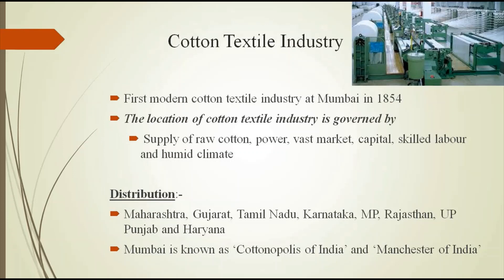To locate the cotton textile industry, some factors are necessary. Especially important is the supply of raw cotton — wherever cotton is grown, it is easy to establish the industry. Power supply and power looms are necessary, along with a vast market. Skilled labor and humid climate are very important factors. Humid climate provides climatic support, which we discussed when studying factors responsible for the location of industry.